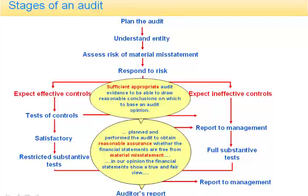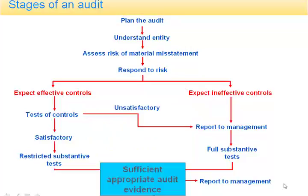Understand what's happening here. The end result is to be able to give reasonable assurance that the financial statements are free from material misstatement. To be able to do that, the auditor needs to find sufficient, appropriate audit evidence to be able to draw that conclusion reasonably. To be able to give our audit opinion, we need sufficient, appropriate audit evidence, and this has to be collected by the auditor. Think of it as though it were a tank of liquid, and there are two ways of filling it.